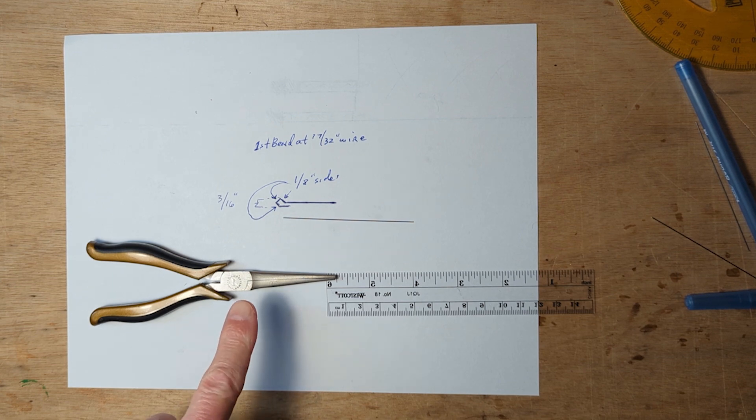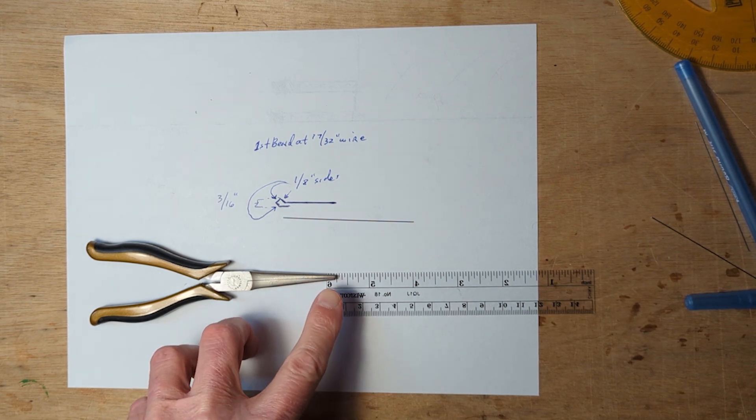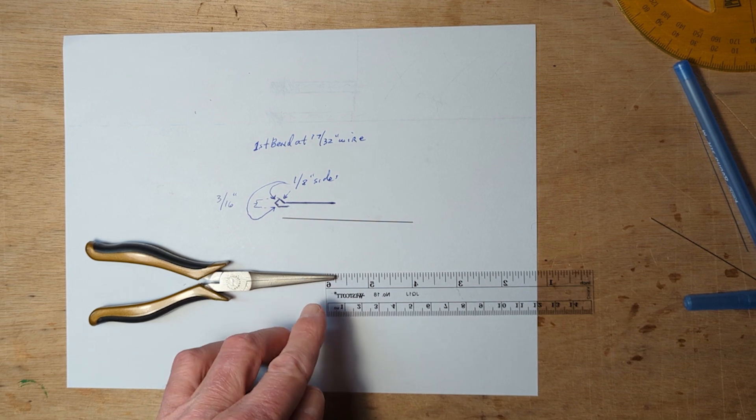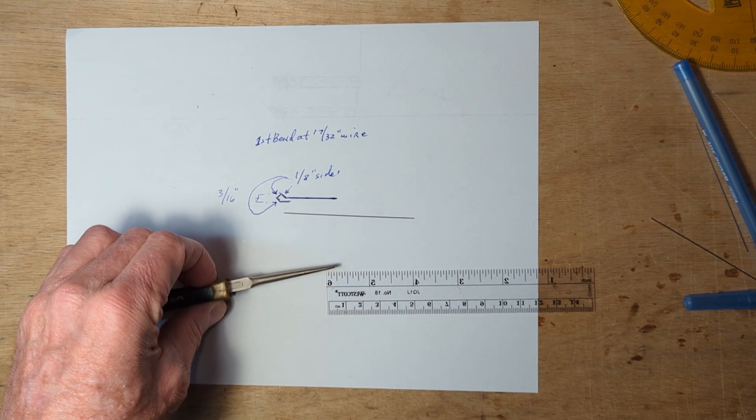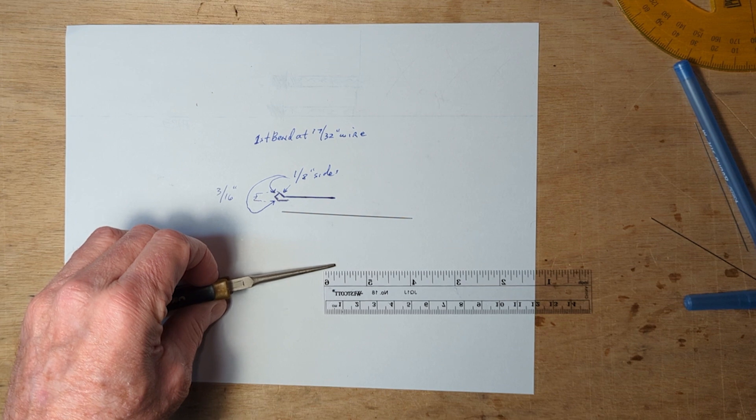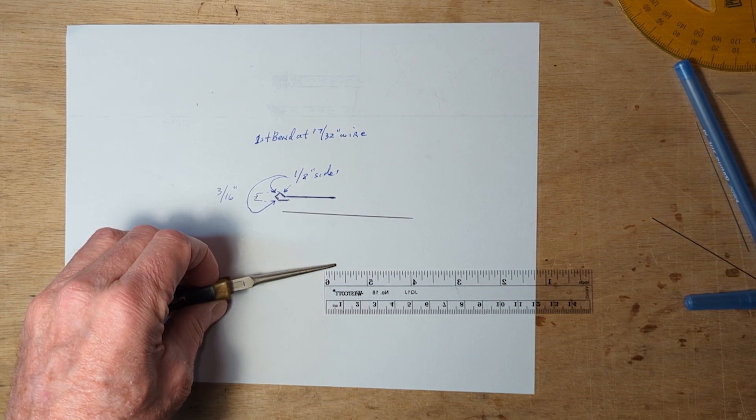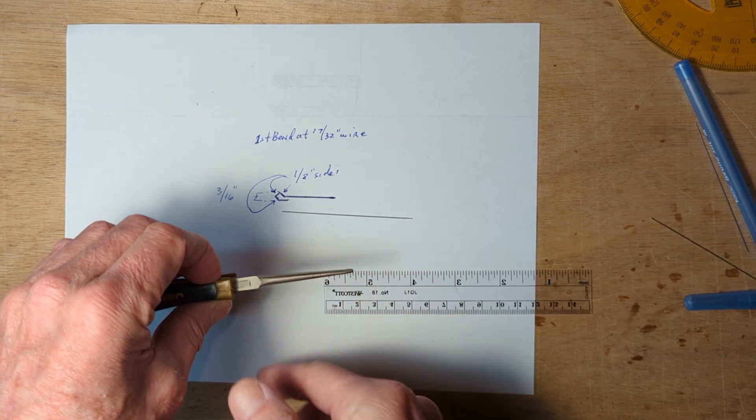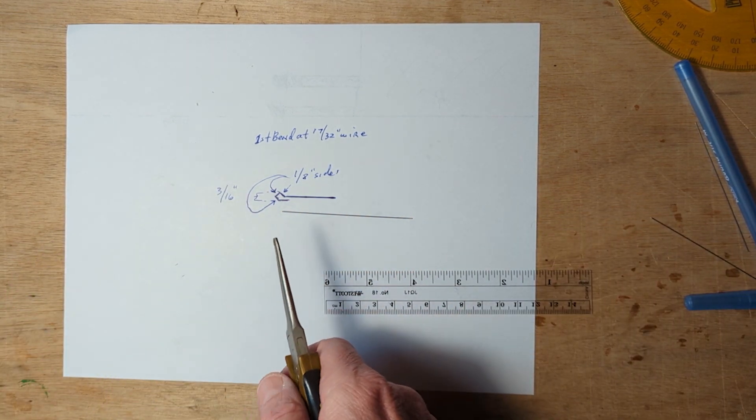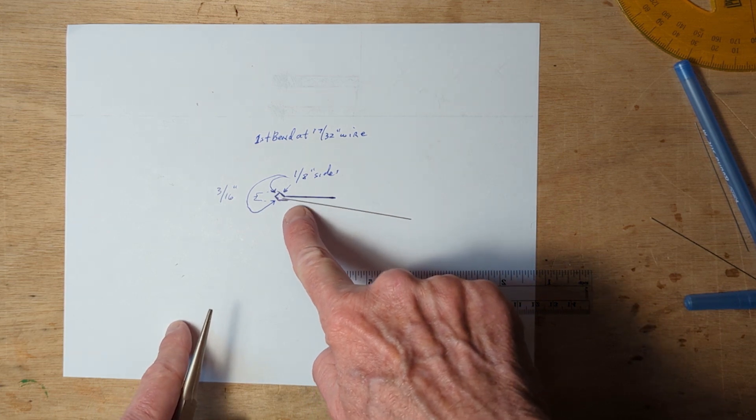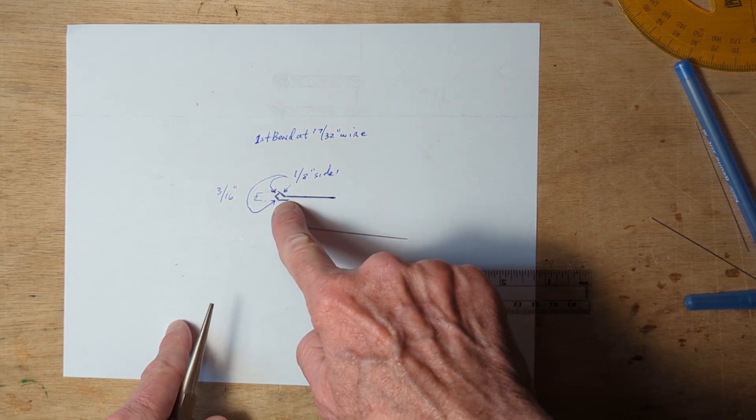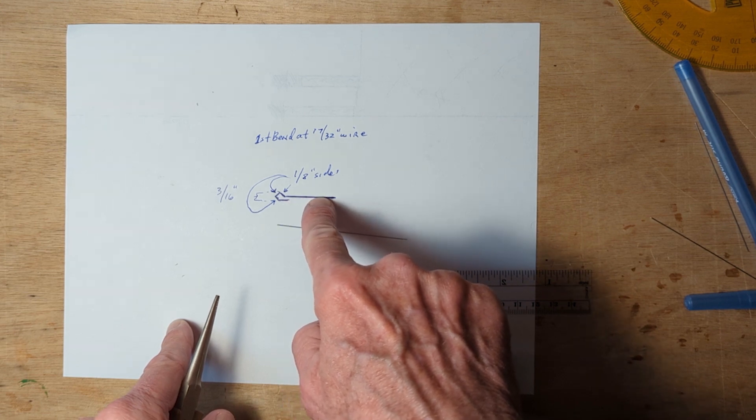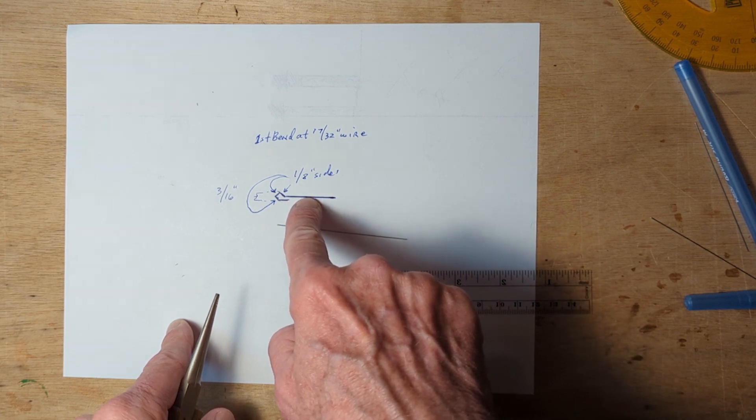I'm going to use narrow jaw pliers and each bend is going to happen at one quarter of an inch depth in the pliers. At that depth the pliers are three thirty-seconds of an inch wide, meaning the jaws of the pliers. That will create a bend that is one-eighth of an inch on each side. I actually draw a diagram like this and the diagram is true to size.